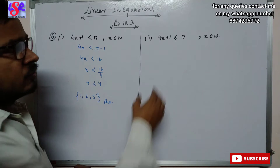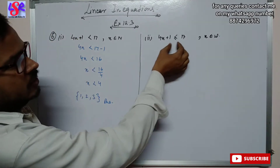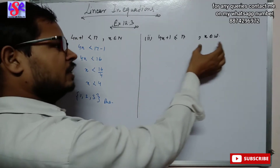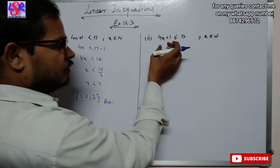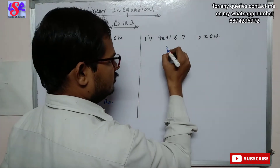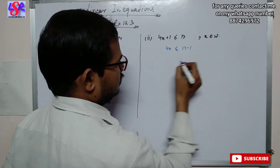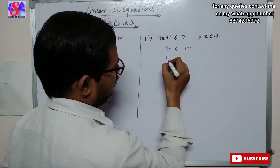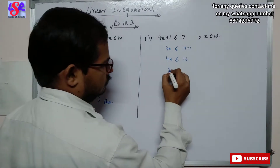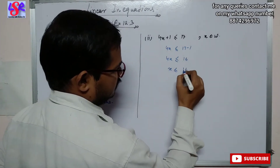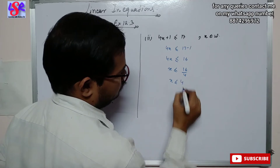Now let us move to the second part. Here we have the same question, 4x plus 1 is less than or equal to 17, but x is the element of whole number. We transpose and this will be 4x less than or equal to 17 minus 1, and 4x is less than or equal to 16.